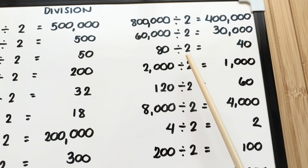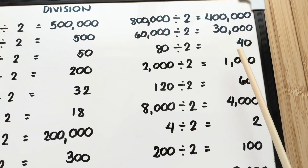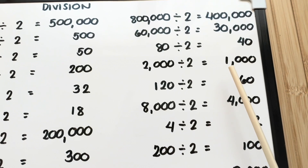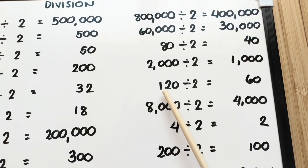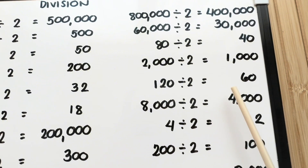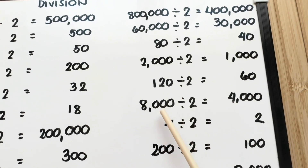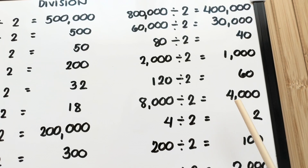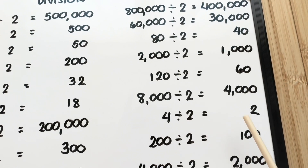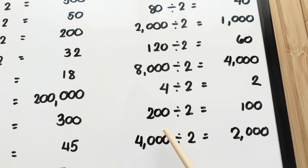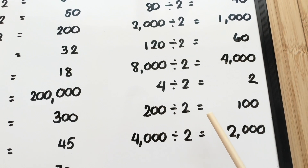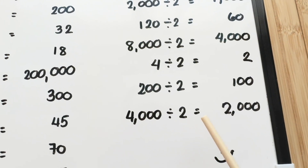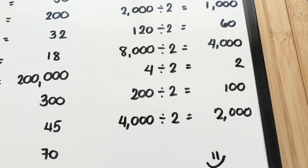80 divided by 2 is equals to 40. 2,000 divided by 2 is equals to 1,000. 120 divided by 2 is equals to 60. 8,000 divided by 2 is equals to 4,000. 4 divided by 2 is equals to 2. 200 divided by 2 is equals to 100. And lastly, 4,000 divided by 2 is equals to 2,000.